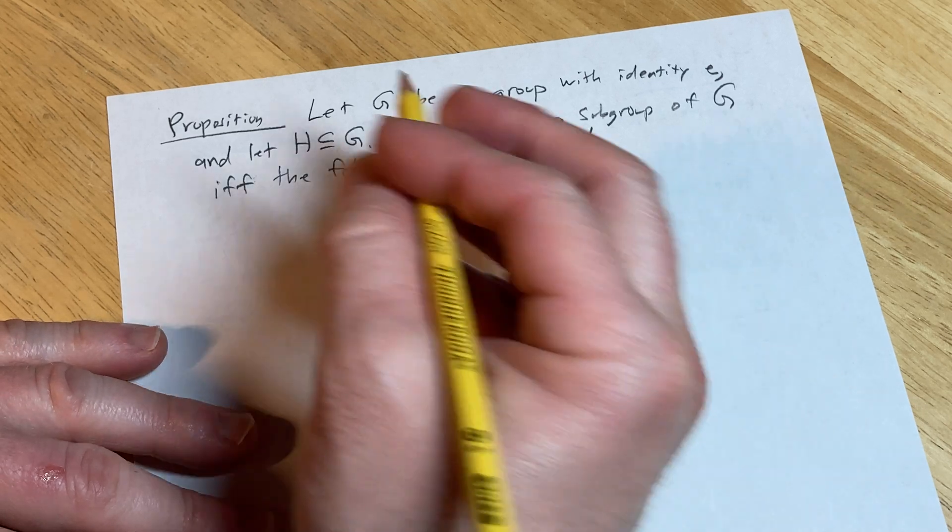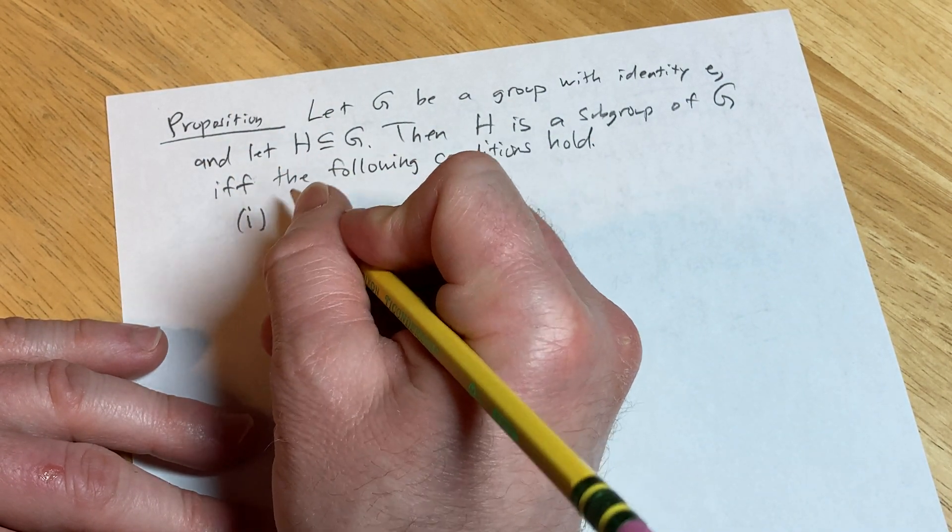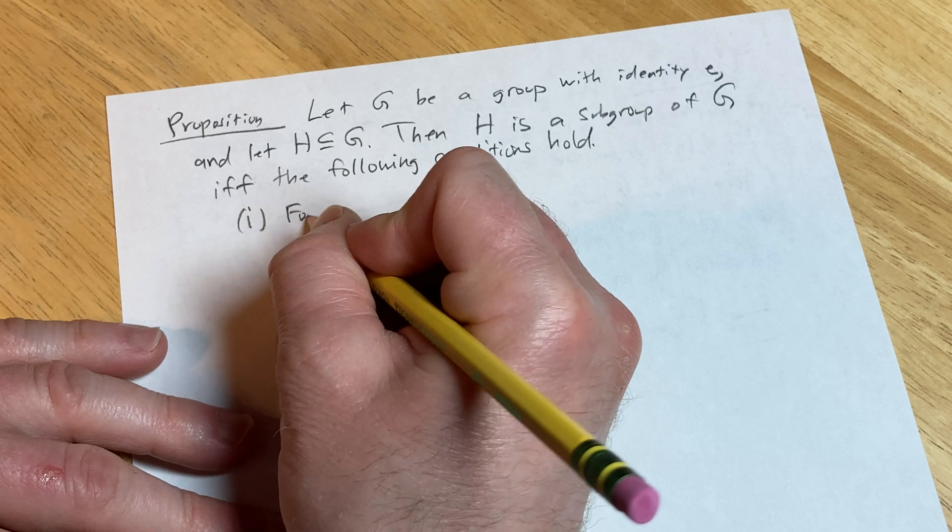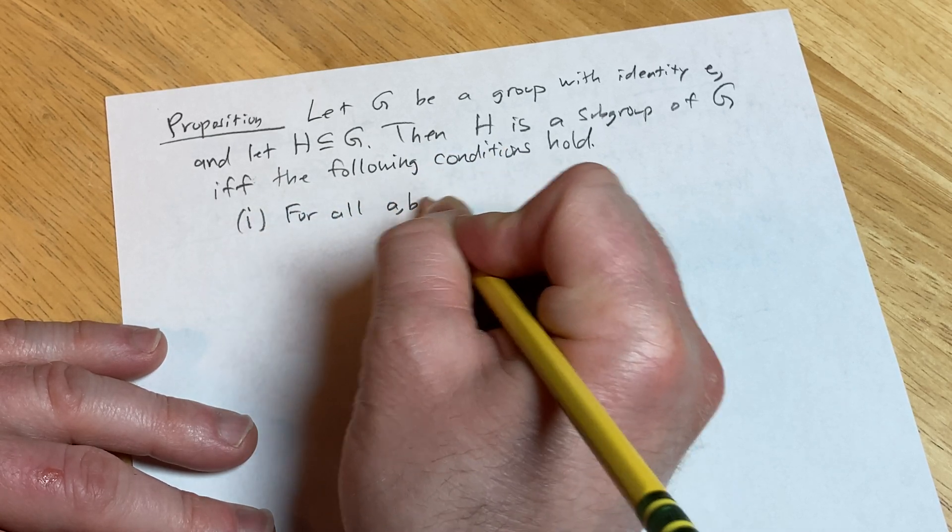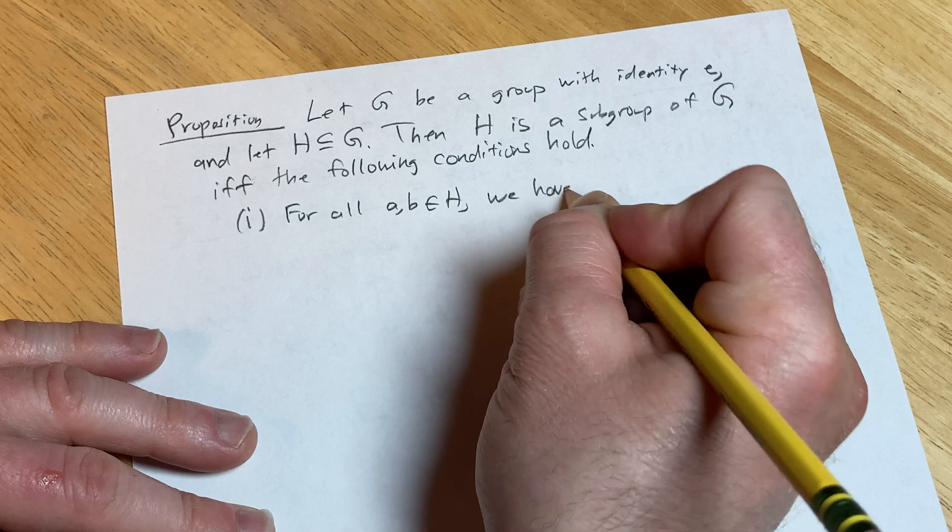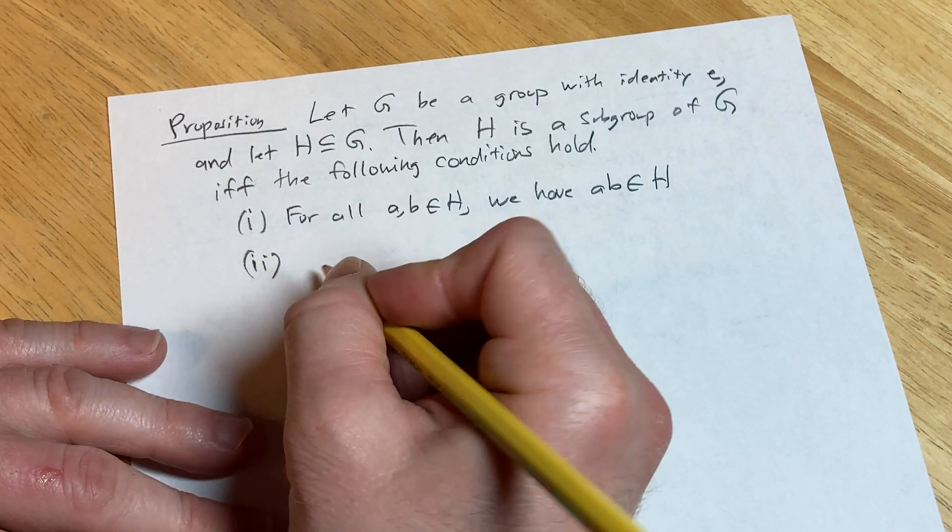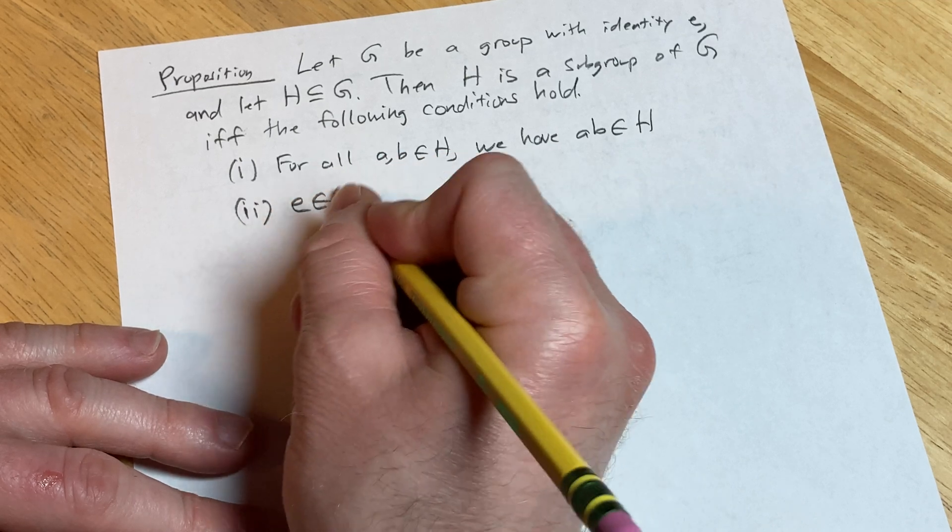And so there's three conditions. The first condition is that for all a, b in H, we have that the product is also in H. Two, E is in H.